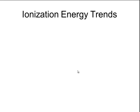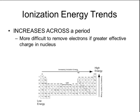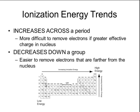Measuring ionization energy across the periodic table shows clear patterns. Moving across the table, it becomes more and more difficult to remove electrons because of greater effective nuclear charge. Chlorine, being smaller than magnesium with its outermost electrons closer to the nucleus, has an effective nuclear charge of 7, making it harder to remove an electron than from magnesium, which has an effective nuclear charge of only 2. Moving down a group, it becomes easier to remove electrons as the atomic radius increases and electrons are farther from the nucleus.